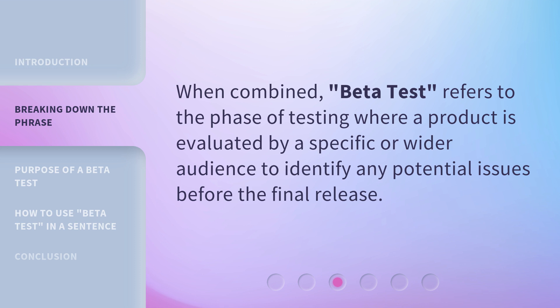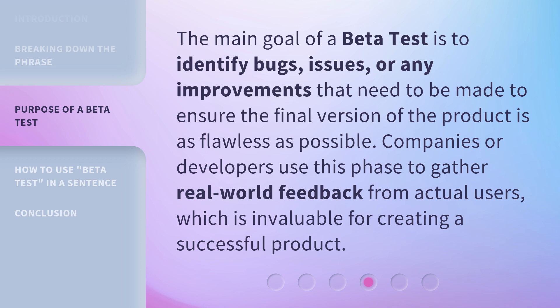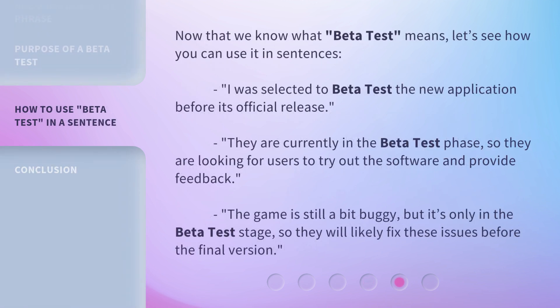Test — this is a general term used to describe the process of evaluating, checking, or assessing something to ensure it is correct, effective, or functioning as intended. When combined, beta test refers to the phase of testing where a product is evaluated by a specific or wider audience to identify any potential issues before the final release.